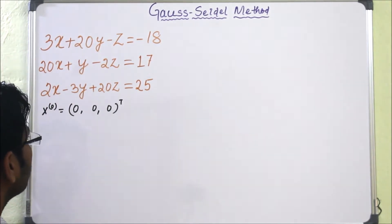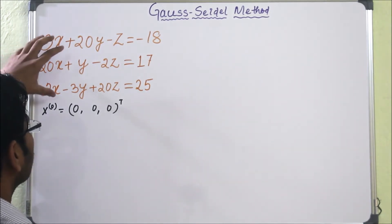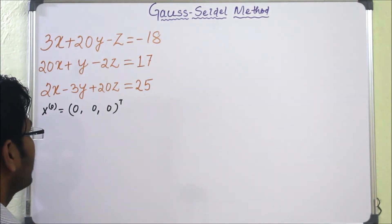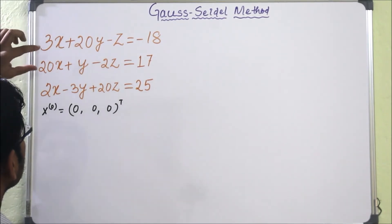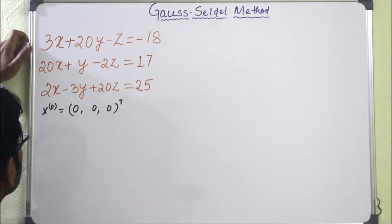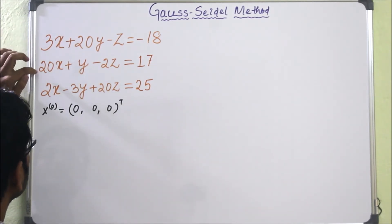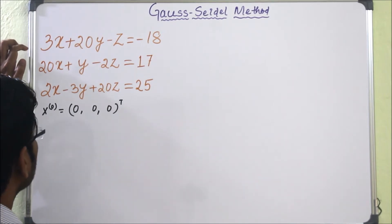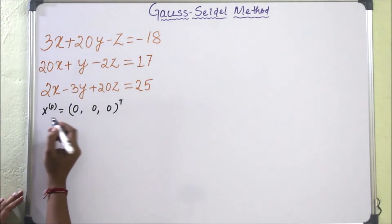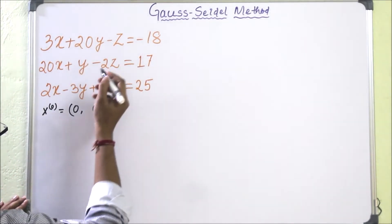So what to do? We have to make this system of equations in the appropriate form. How to do? If I switch these two equations, means if I write equation 1 as equation 2 and equation 2 as equation 1, then it will be in diagonally dominant form.